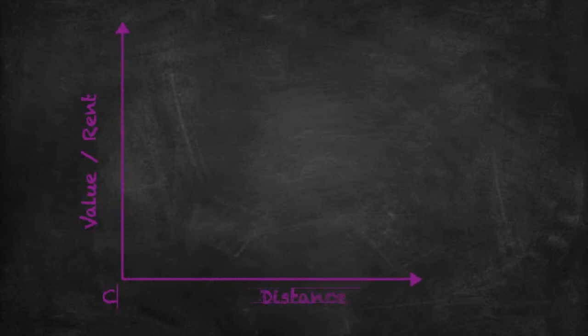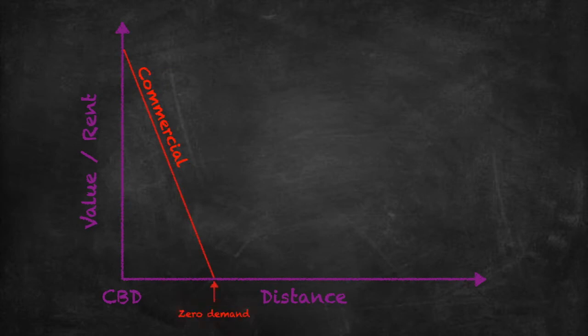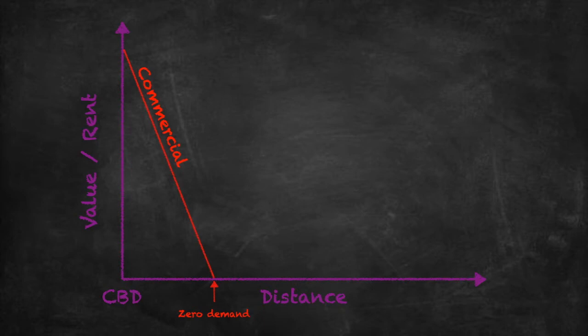Let's look first at commercial land. Commercial land will want to be as close as possible to the CBD. There's a certain distance at which there'll be zero demand — beyond that point the business makes no profit, so it won't be prepared to locate there. That's why commercial land competes strongly for space in the CBD, and its land value bid is very high. It's prepared to pay a lot of money to be in or close to the CBD.